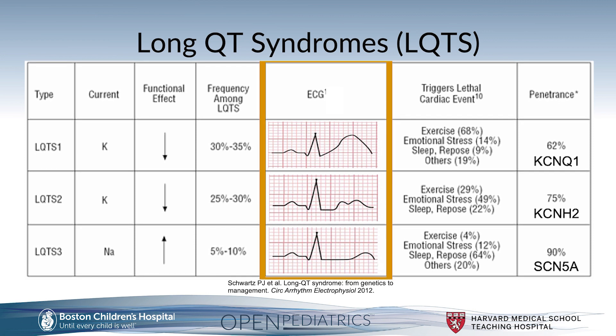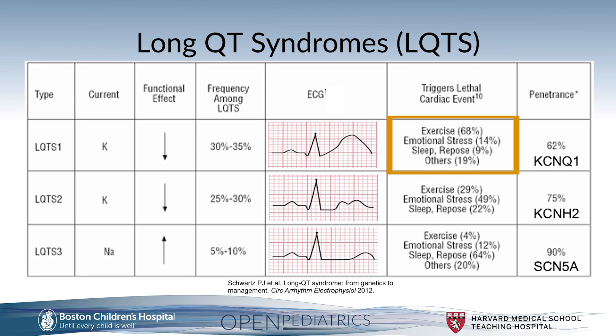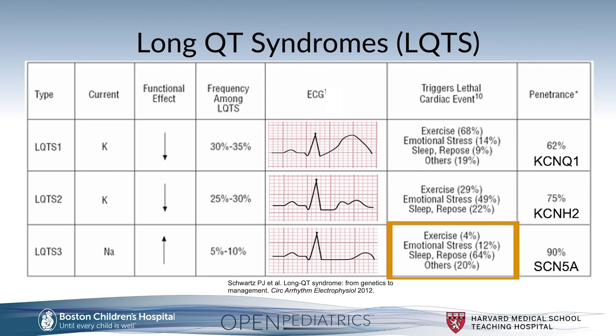An important aspect of these three types is the underlying factors that can trigger lethal cardiac events. In all types, exercise, emotional stress responses, and periods of high vagal tone such as sleep can trigger life-threatening events. However, certain triggers are more common in each type. For type 1, exercise is the most common trigger in approximately 68% of patients. In type 2, emotional stress is the most common trigger in upwards of 49%. In long QT type 3, periods of high vagal tone such as sleep are the most common trigger.